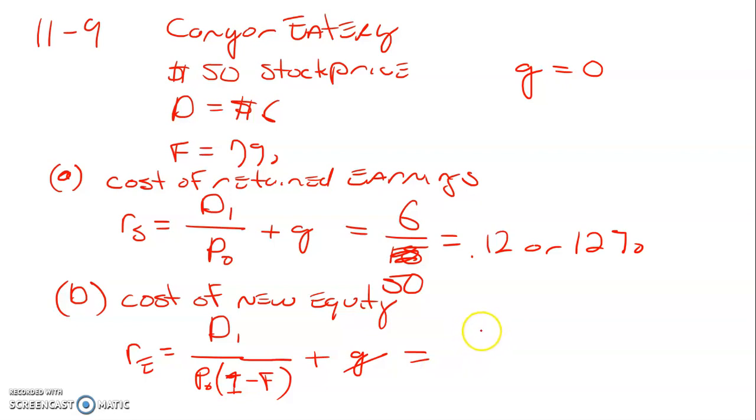So all we have here is $6 divided by our $50 share price times 1 minus the flotation cost of 0.07, which gives us 0.129 or 12.9%.